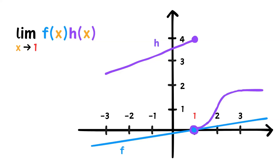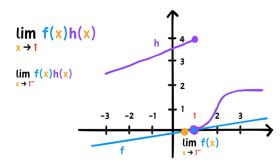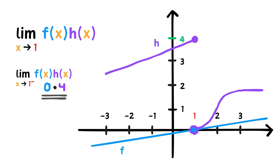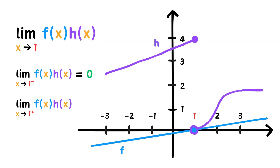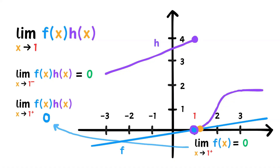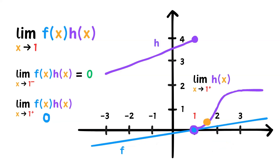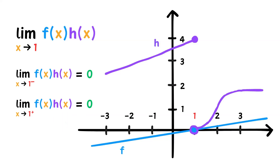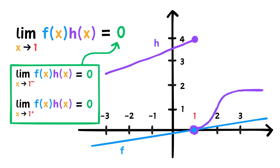Let's look at another example. What is the limit of f of x times h of x as x approaches 1? First, let's find the limit from the left. The limit of f of x as x approaches 1 from the left is 0. The limit of h of x as x approaches 1 is 4. 0 times 4 is 0, so the limit from the left is 0. From the right, the limit of f of x as x approaches 1 from the right is 0, and the limit of h of x from the right is also 0. So the limit of f of x times h of x from the right is 0 times 0, or 0. Both one-sided limits are 0, so the limit of f of x times h of x as x approaches 1 is 0.